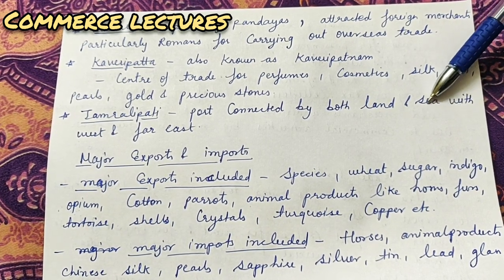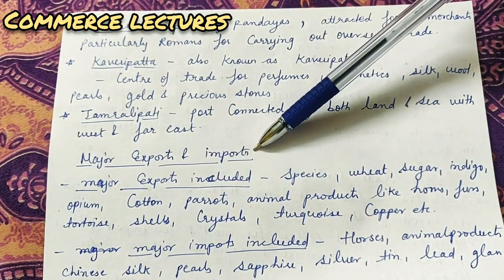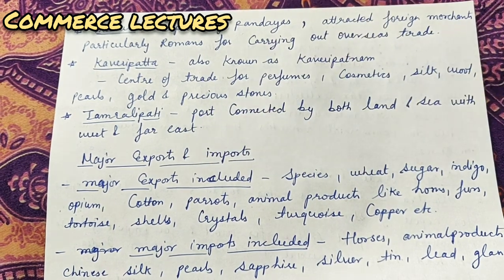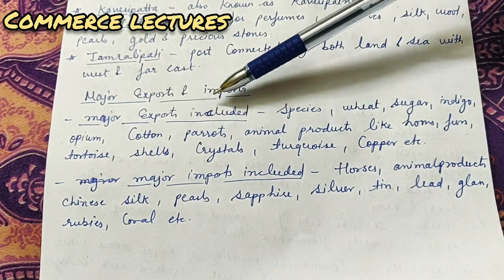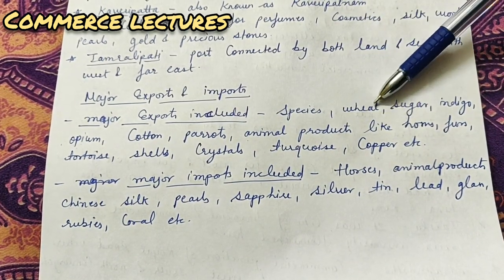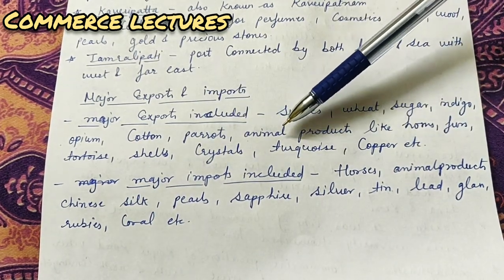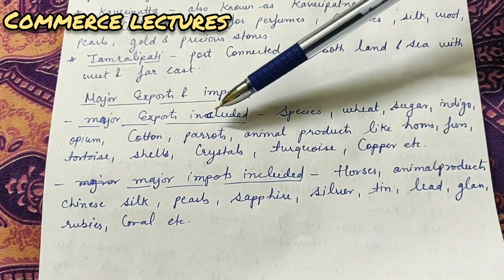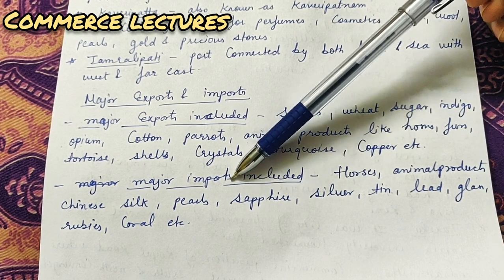Now let us read about major exports and imports of ancient India - what was mostly exported and imported. The major exports included: Spices, Wheat, Sugar, Indigo, Opium, Cotton, Parrots, and animal products like Horns and Furs. These are some examples of goods that were mostly exported at that time.